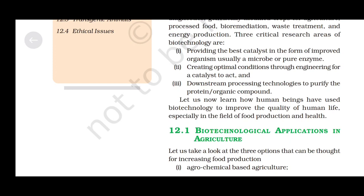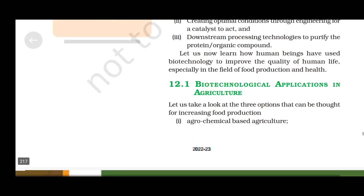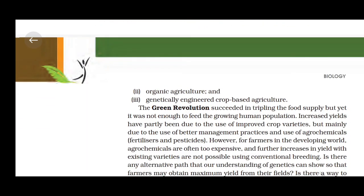Biotechnological applications in agriculture. There are three options for increasing food production: first, agrochemical-based agriculture; second, organic agriculture; and third, genetically engineered crop-based agriculture. The green revolution succeeded in tripling the food supply, but was not enough to feed the growing human population. Increased yields were partly due to improved crop varieties, but mainly due to better management practices and use of agrochemicals — fertilizers and pesticides. However, for farmers in the developing world, agrochemicals are often too expensive, and further yield increases with existing varieties are not possible.